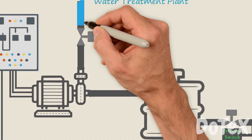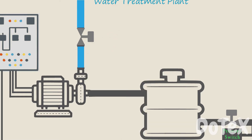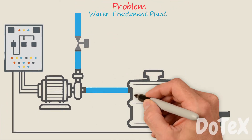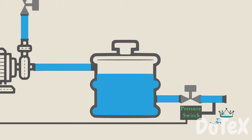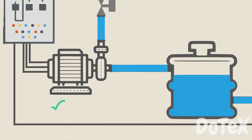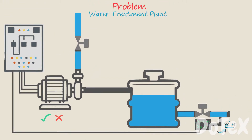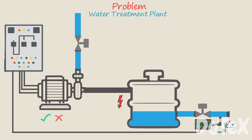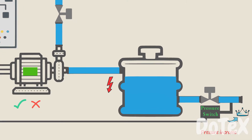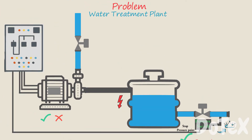A water treatment plant usually has a constant flow of water coming into the plant. The pump moves water into the pressure tank, and the pressure switch is the control unit for the system, ordering when the pump will start or stop. When pressure in the water system drops to a predetermined set point, the pressure switch tells the pump to start working. The pump moves water from the incoming water pipe into the pressure tank. The pressure will increase until the stop pressure point is reached, and the water pump will be turned off by the pressure switch.